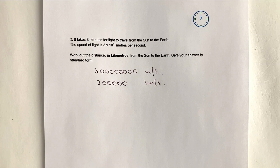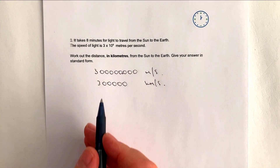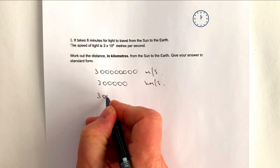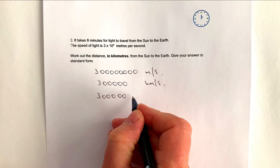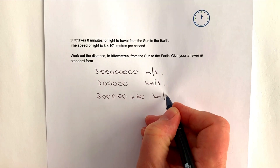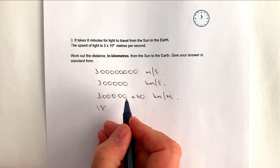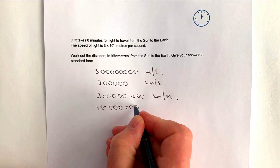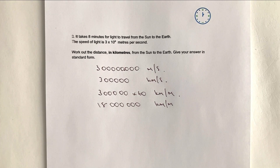Kilometres per second isn't helpful because we're told it takes eight minutes, so we need kilometres per minute. There are 60 seconds in a minute, so I multiply by 60. Three times six is 18, and counting the zeros: one, two, three, four, five, six — so 18 followed by six zeros, which is 18 million kilometres per minute. Sounds amazingly fast!